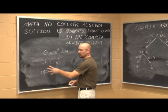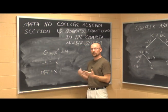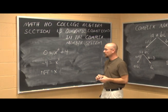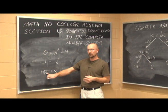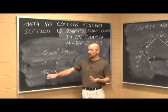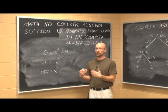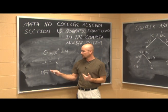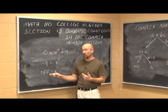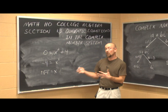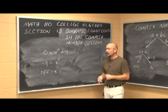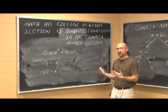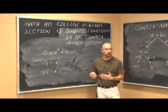A square root asks: what number times itself gives the value under the radical? A negative times a negative is a positive, and a positive times a positive is a positive, so there is no value that gives us negative 4. There's no real solution to this, so we need a new number system — the complex number system.